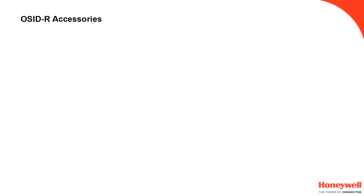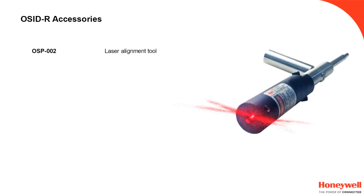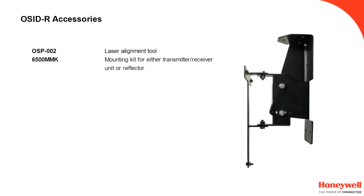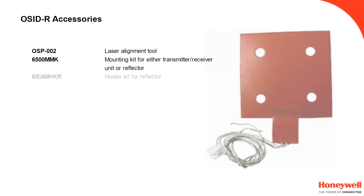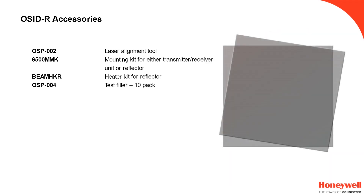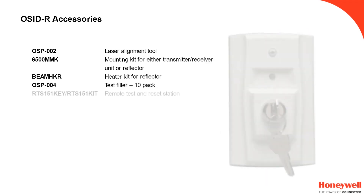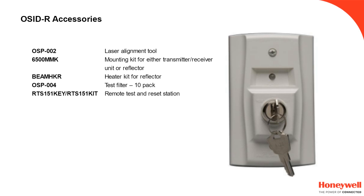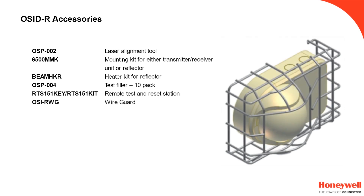There are a range of accessories available for the OSID R and the rest of the OSID family. The laser alignment tool is available to help with the initial aiming of the device. There is a mounting kit which provides additional directional adjustability. A heater is available for the reflector. Test filters are available, sold in packs of 10. The remote station provides an electronic device for resetting the detector from ground level. For devices used in sports areas or otherwise liable to mechanical damage, a wire guard is available.